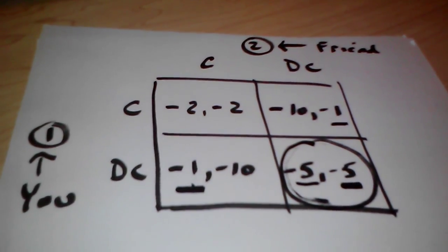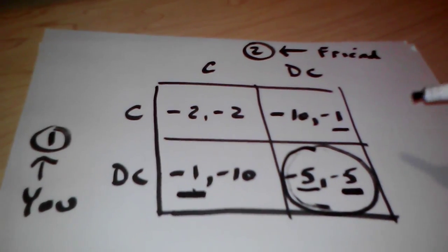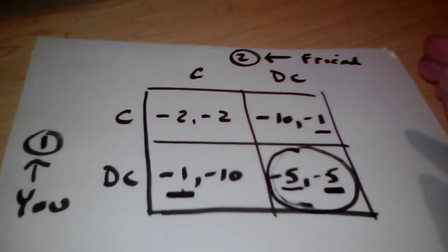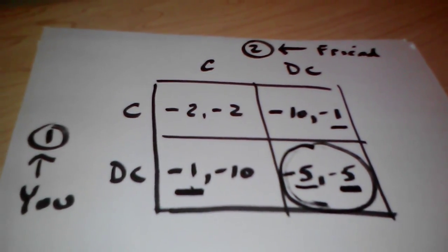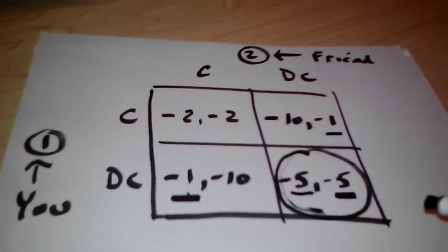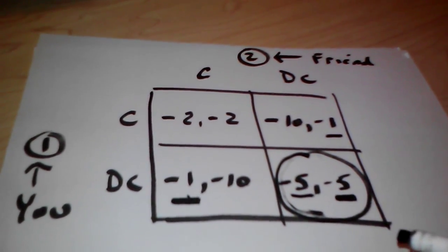So the key takeaway here is, in any game theory game when you're solving it in a form like this, in what we call normal form, you want to make sure that you ask those specific questions in a logical order, underline each decision that you make, and then any of the boxes that have both numbers underlined will be your equilibrium.